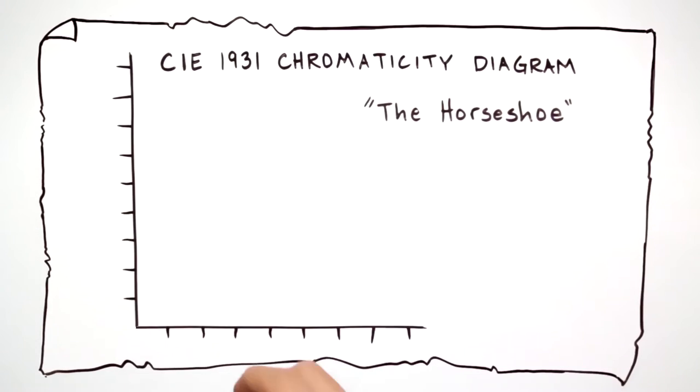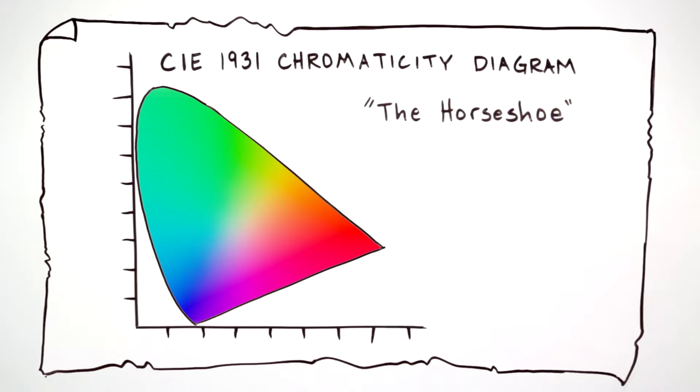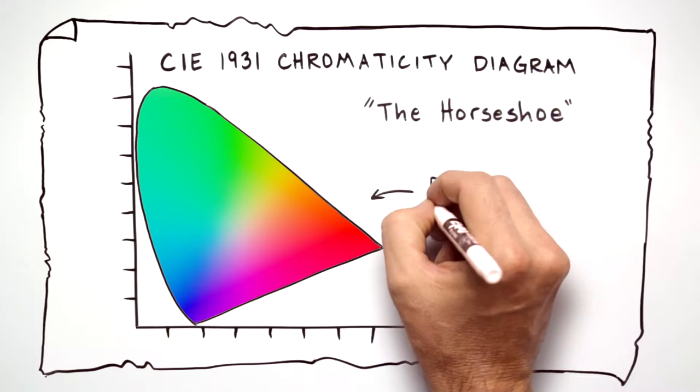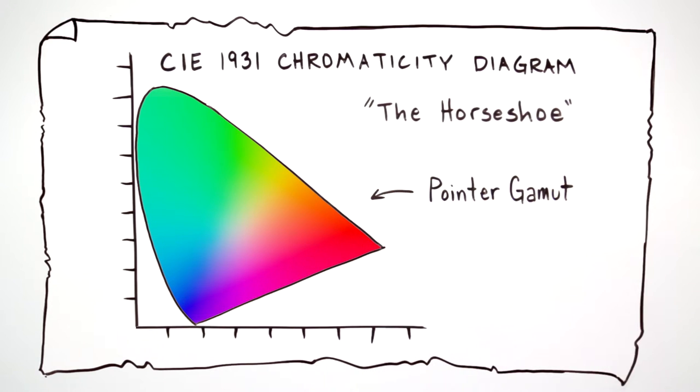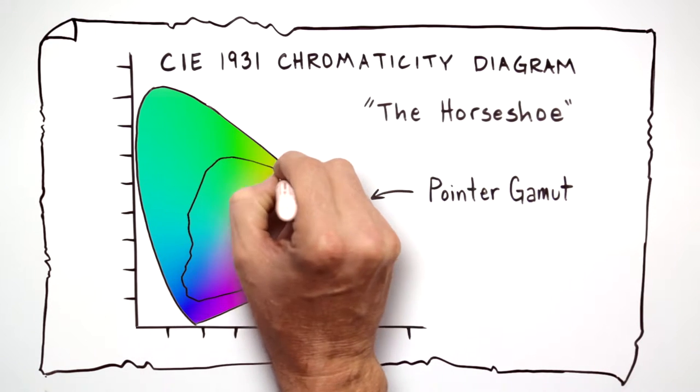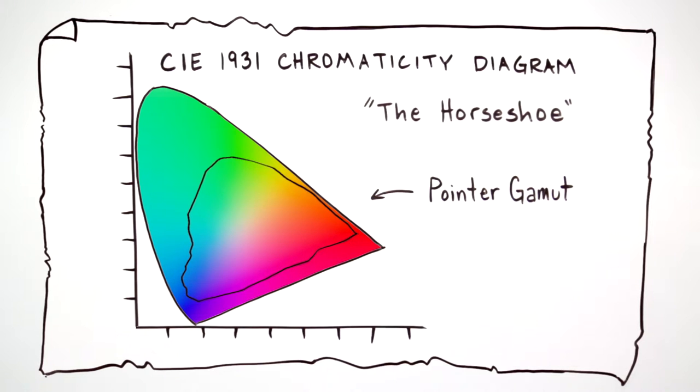In 1931, a famous visual map was created to show all the colors the human eye can see. Years later, Michael Poynter's research made it clear that in the real world, we typically encounter less than half of the colors we're capable of seeing.